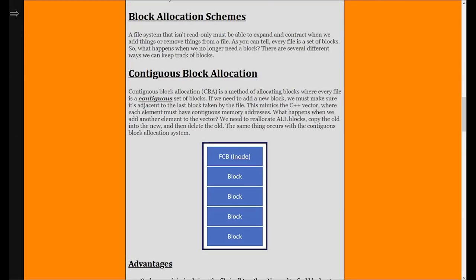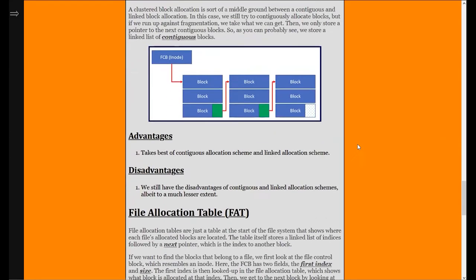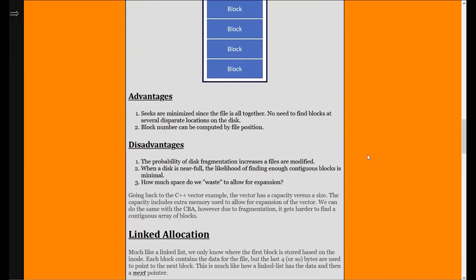In this lecture we're going to talk about block allocation schemes — different ways we can put a file system together. When we talked about Minix 3, we talked about an index scheme with seven direct pointers, a singly indirect pointer, a doubly indirect pointer, and a triply indirect pointer. The ones we're going to cover today are: contiguous block allocation, linked allocation, clustered allocation, the file allocation table, and indexed allocation.